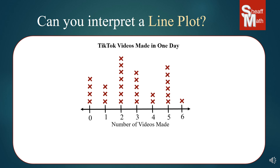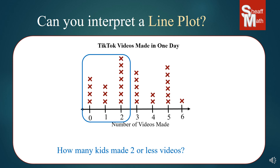Most of the time you're not going to be given a table, so you'll have to interpret the actual line plot. The questions can get tricky, so read them very carefully and make sure you add the right things. This question says: how many kids made two or less videos? That would be two, one, or zero — so we have seven, three, and four, which makes fourteen kids.